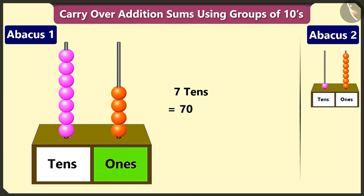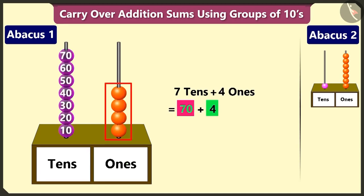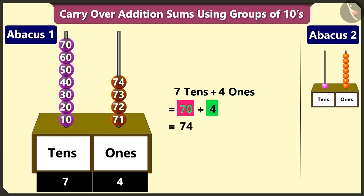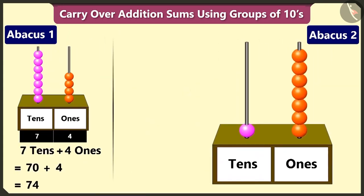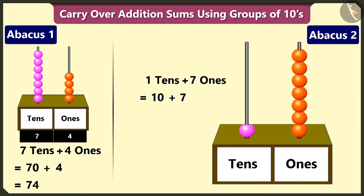And in the ones box, there are 4 beads, which makes it 4 ones, that is 4. Now, to add 4 to 70, count after 70: 71, 72, 73 and 74. And in the second abacus, in the tens box, there is 1 bead — that is 1 ten. In the ones box, there are 7 beads, that is 7 ones. So, adding 1 ten and 7 makes 17.